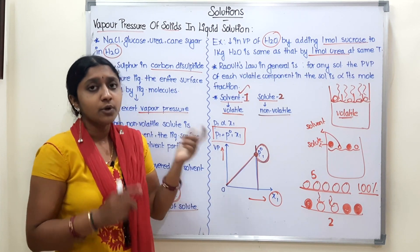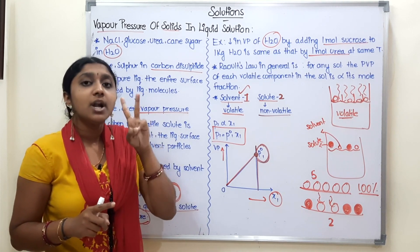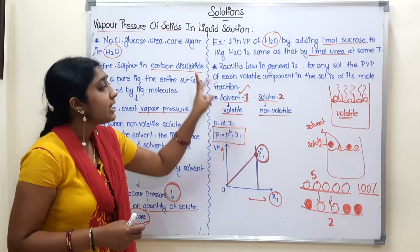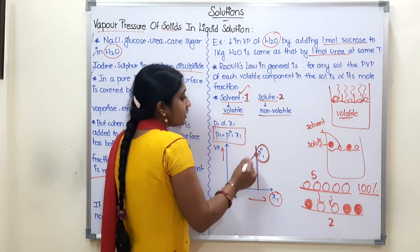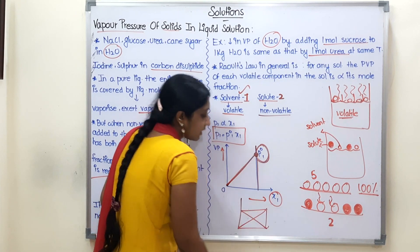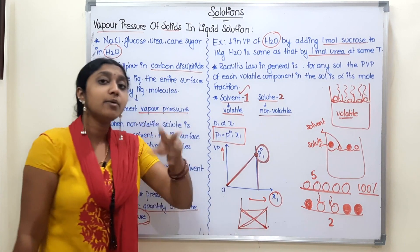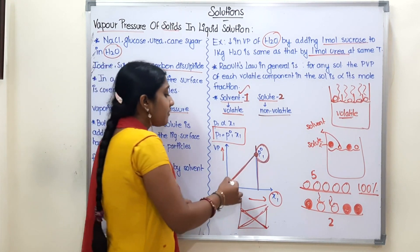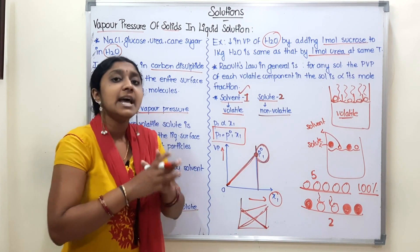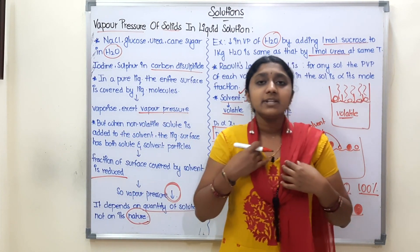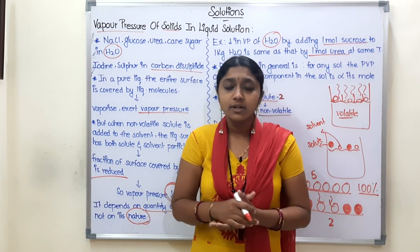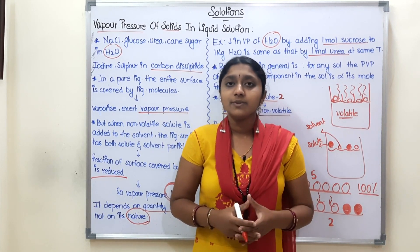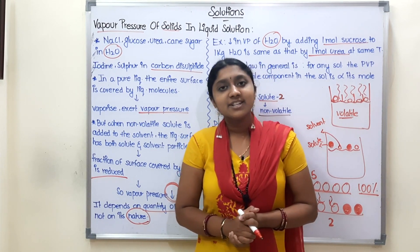Now we will go to the next video on Liquid-Liquid Solutions. In Liquid-Liquid Solution, we have two volatile components, one more volatile and one less volatile. We will explain that. Here, we have one volatile and one non-volatile. The next video will cover the graph for ideal and non-ideal solutions. I hope this is clear. Please do not forget to subscribe. Please like and share the video with your friends. We will see you in the next video. Stay tuned. Bye.